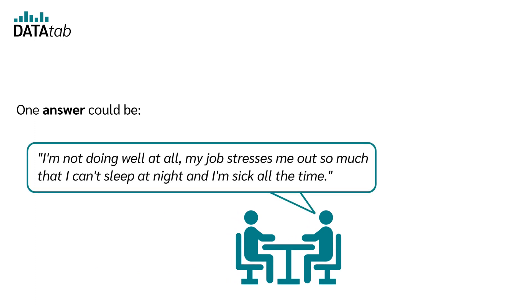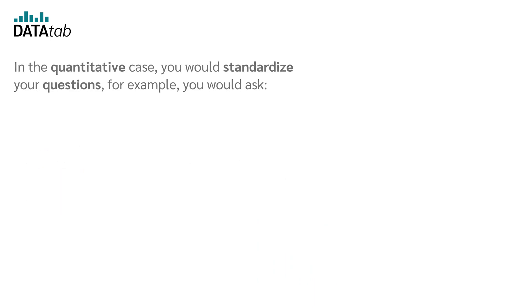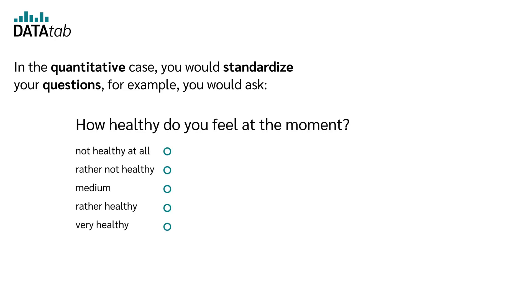One answer could be: 'I'm not doing well at all. My job stresses me out so much that I can't sleep at night and I'm sick all the time.' In the quantitative case, you would standardize your questions. For example, you would ask: 'How healthy do you feel at the moment?' with specific answer options: not healthy at all, rather not healthy, medium, rather healthy, very healthy. So you would provide specific answer options.